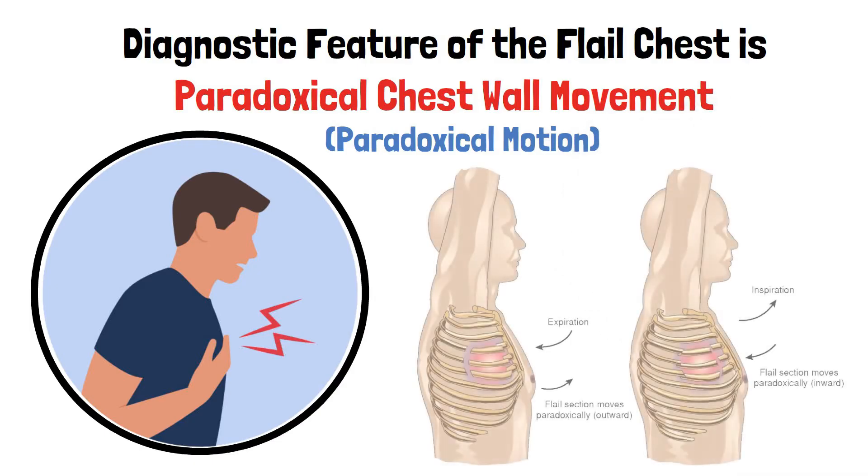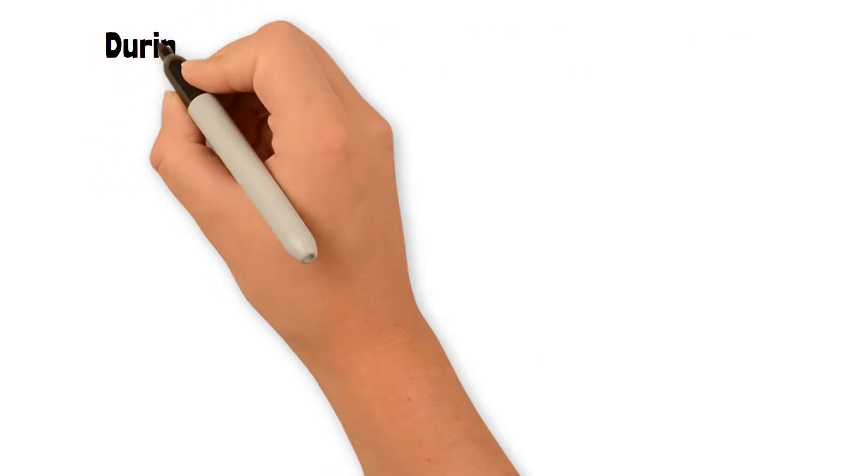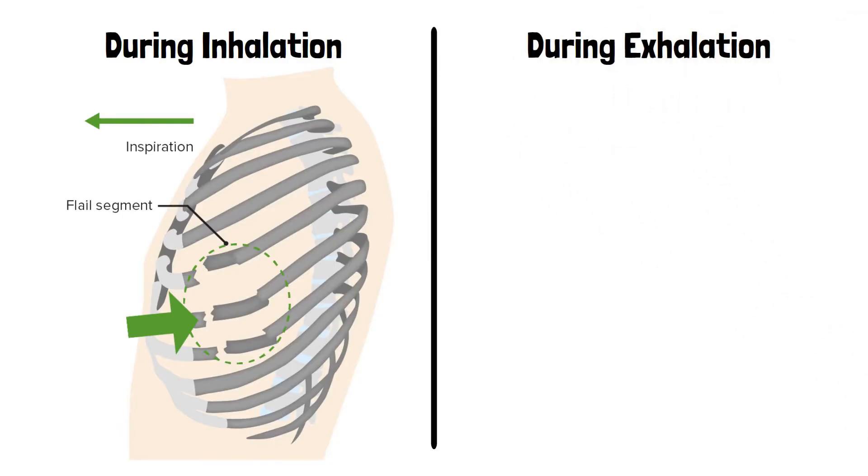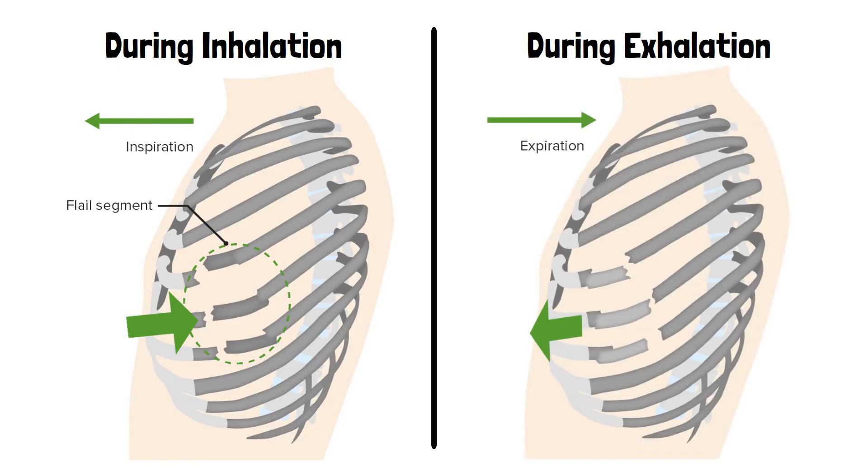This is where the flail segment moves opposite to the rest of the chest during breathing. During inhalation, the flail segment sinks inward while the rest of the chest expands. During exhalation, the flail segment bulges outward while the rest of the chest moves inward.